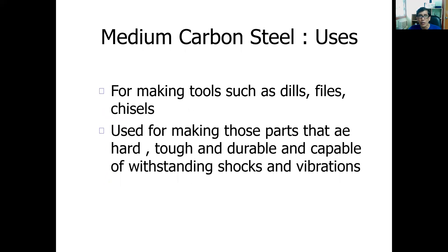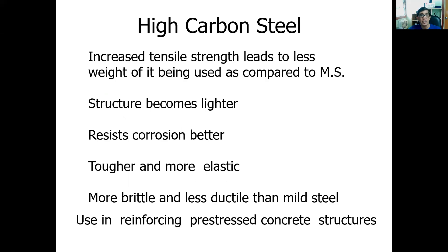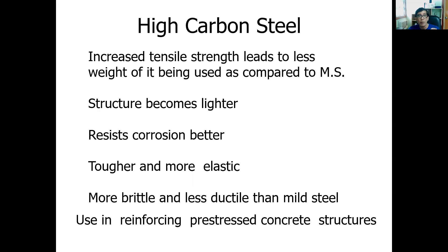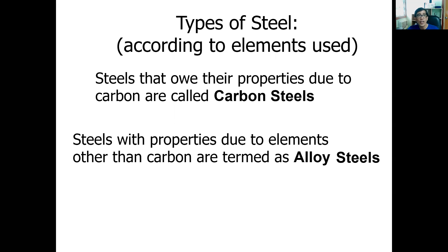Medium carbon steel has a granular structure, is tougher and more elastic than mild steel, easier to harden and temper, but more difficult to forge and weld. It is stronger in compression than in tension and withstands shocks and vibration better. It is used for files, chisels, nails, hammers, picks, and shovels — parts that need to be hard, tough, durable, and capable of withstanding shocks. High carbon steel has increased tensile strength, is lighter, resists corrosion better, but is more brittle and less ductile than mild steel, used for reinforcing pre-stressed concrete structures.